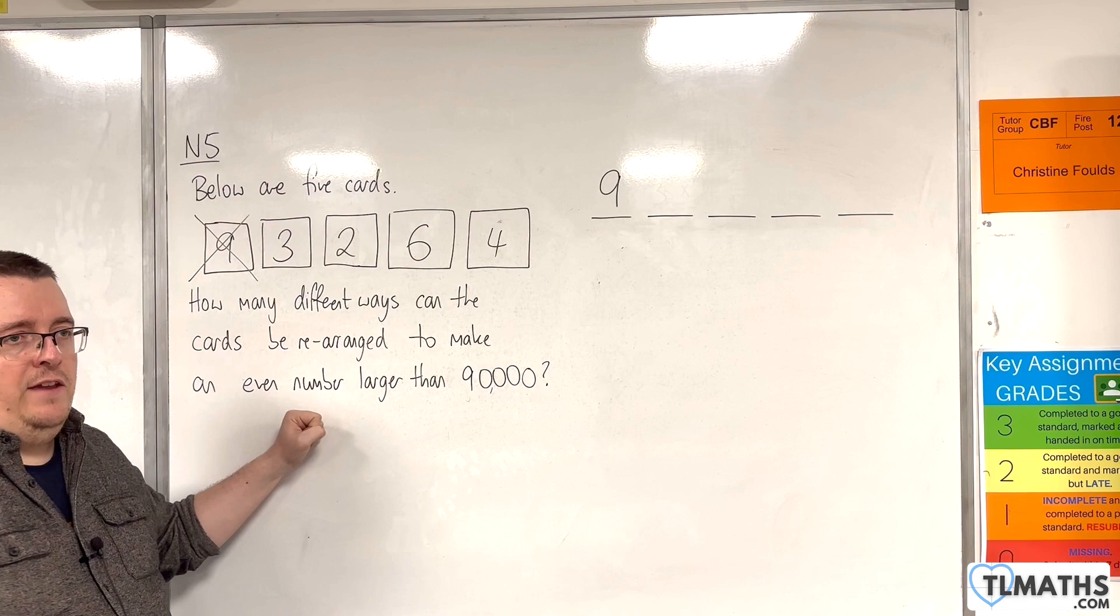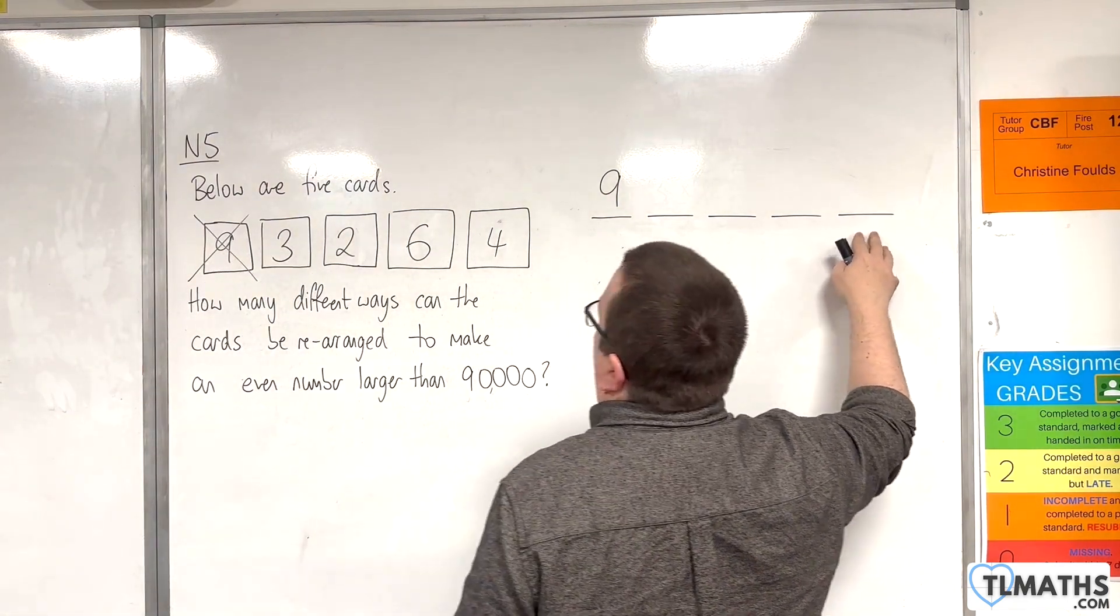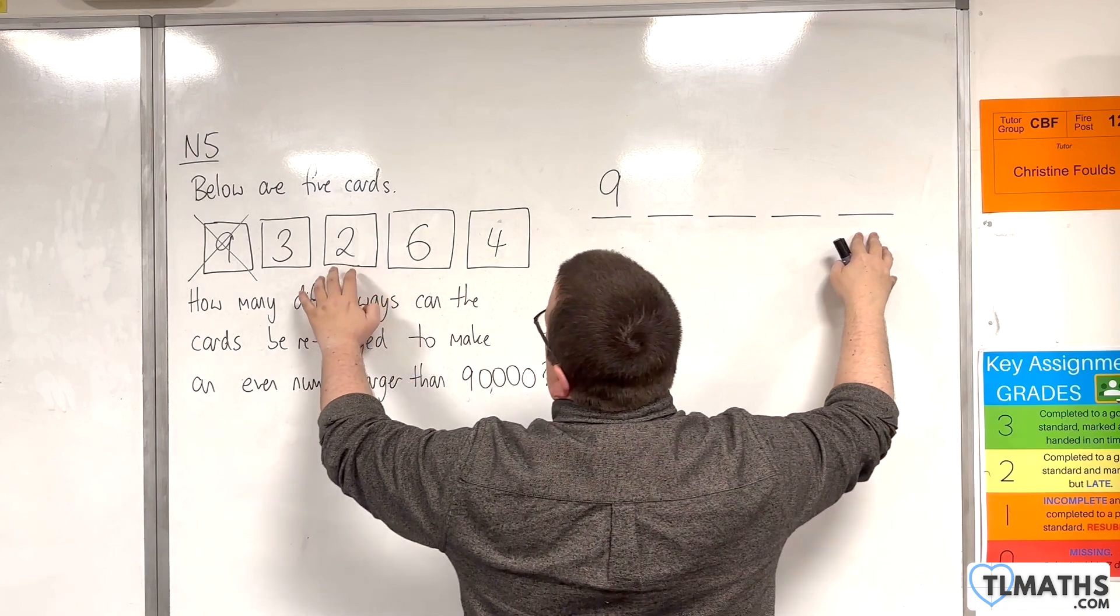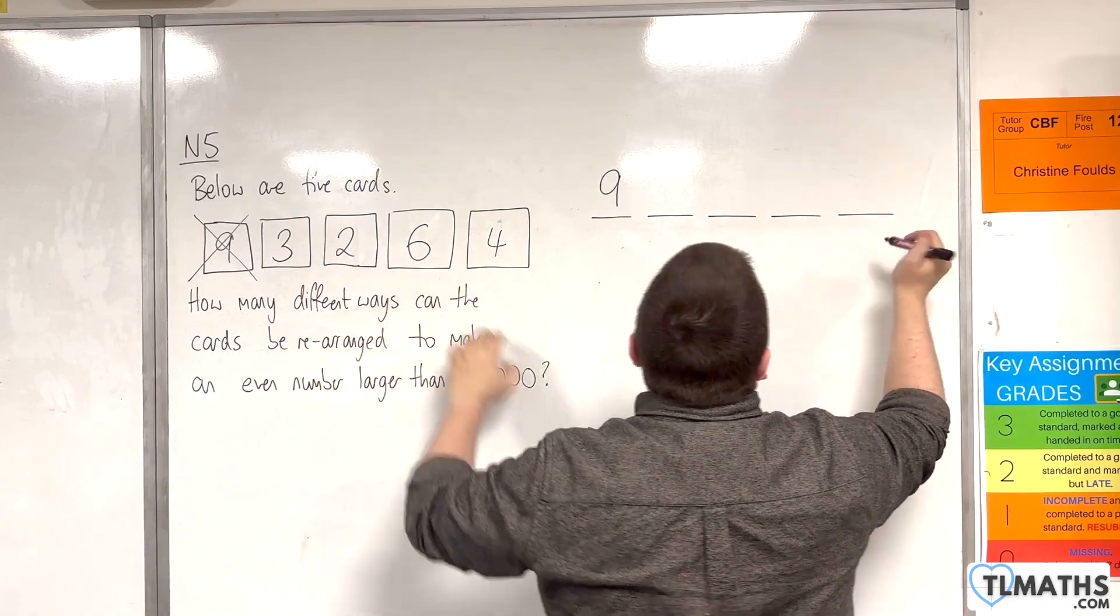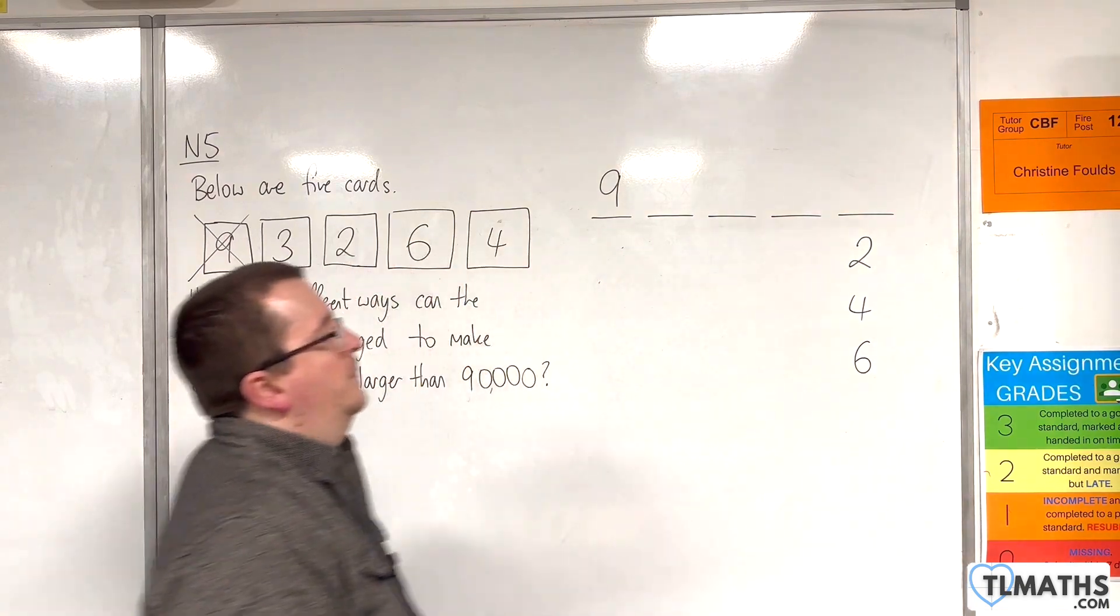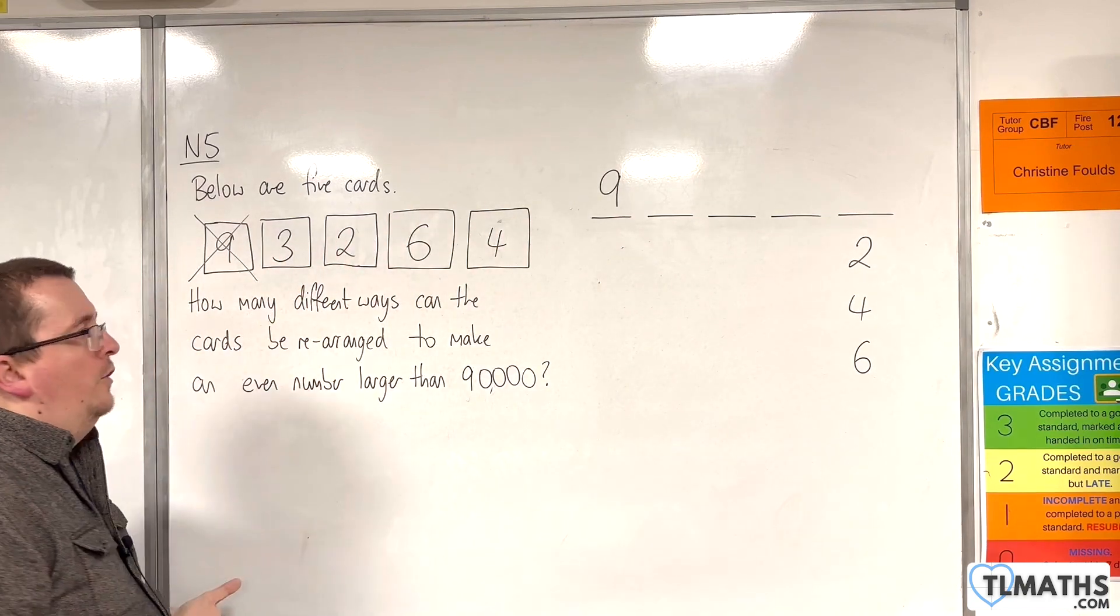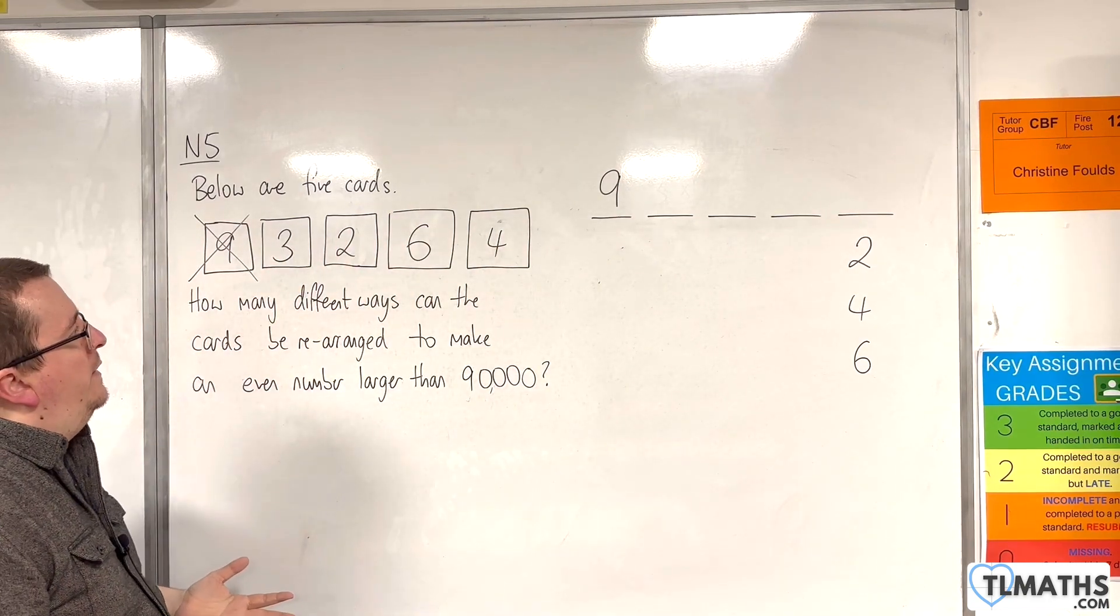Now, it has to be an even number. So the final digit has to be even. So that final digit could be 2, 4, or 6. The other 3 here could be any of those 4. It doesn't matter what it is.